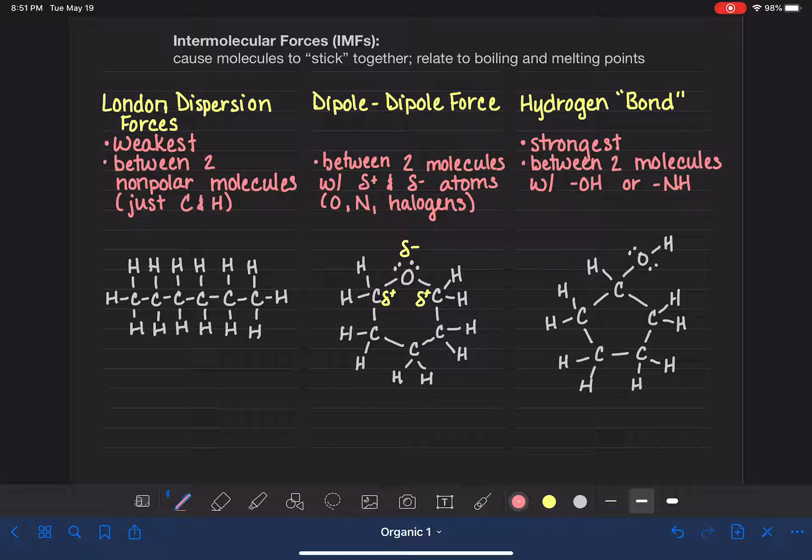And so in the hydrogen bonding situation, you have to have not just an oxygen, but an oxygen with a hydrogen attached to it. So over here where we have an oxygen, but there's no hydrogen attached to it, this molecule is not capable of hydrogen bonding.